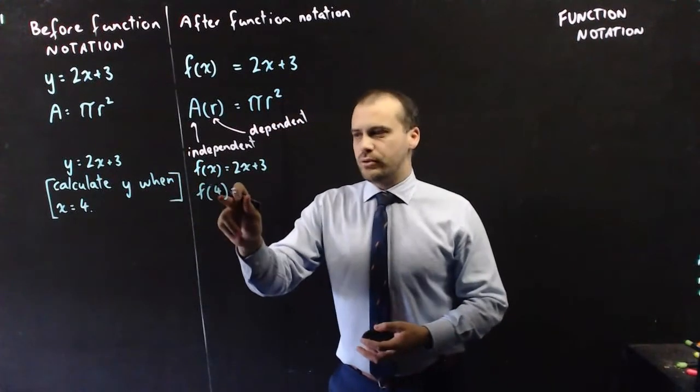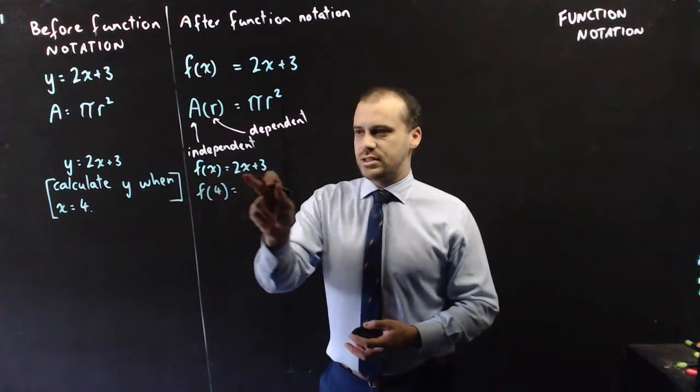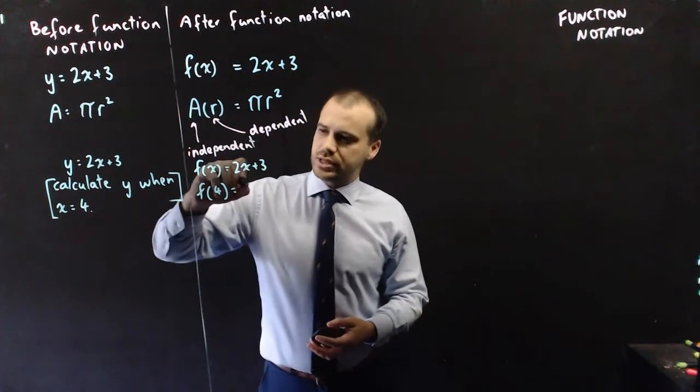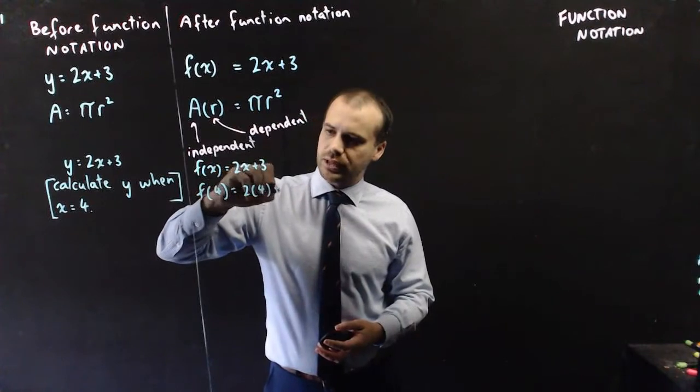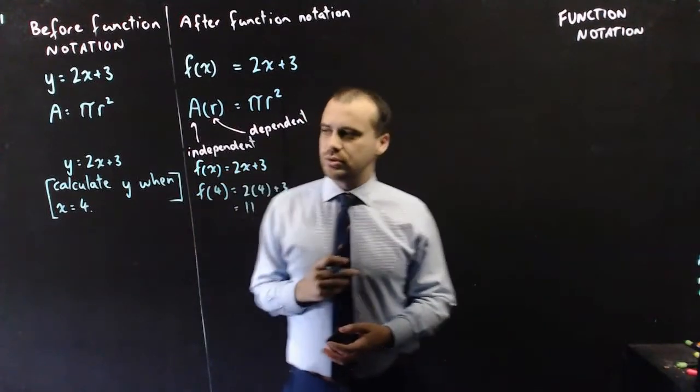That says put 4 in for x into this equation. So f of 4 is equal to 2 times 4 plus 3, which is equal to 11.